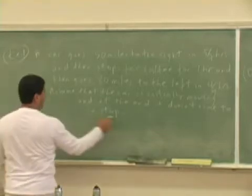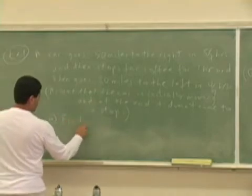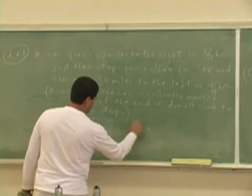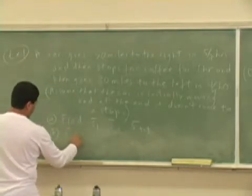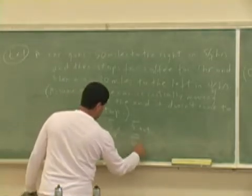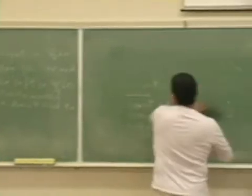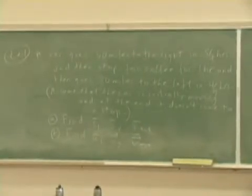So here are the questions. Question A is going to be: find the average speed in stage 1, the average speed in stage 2, the average total speed of the car in the two stages. And then B: find the average velocity in stage 1, the average velocity in stage 2, the average velocity total.